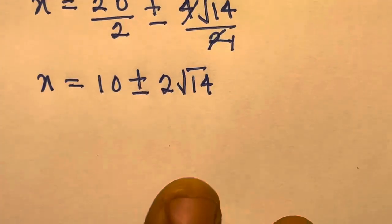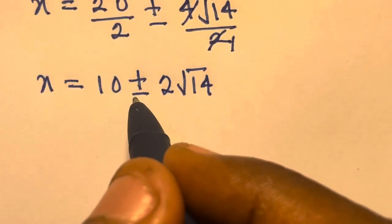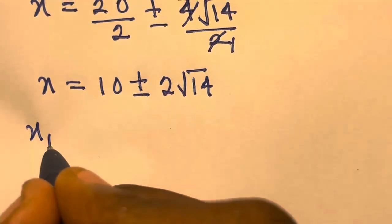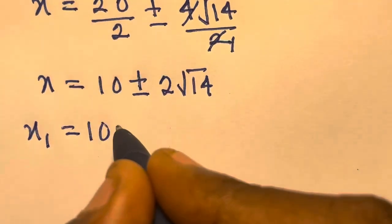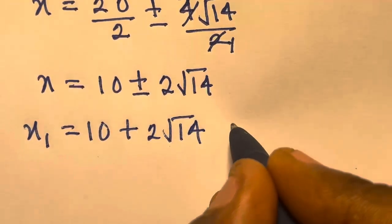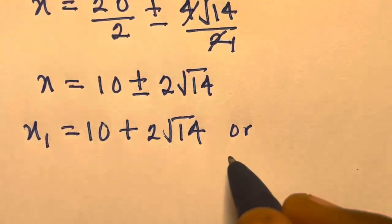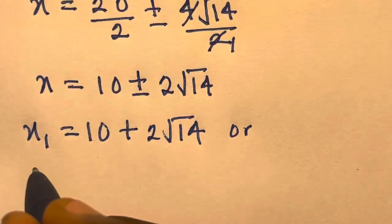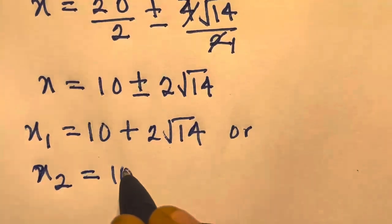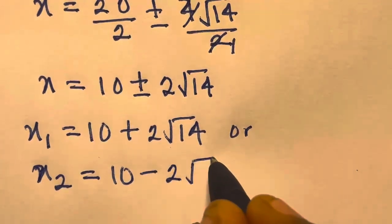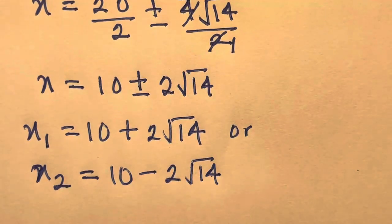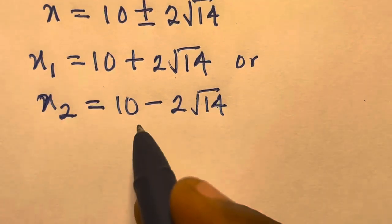Therefore, we have two solutions: x equals 10 plus 2 root of 14, or x equals 10 minus 2 root of 14.